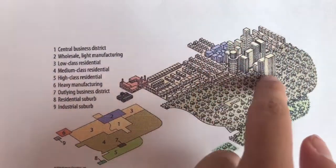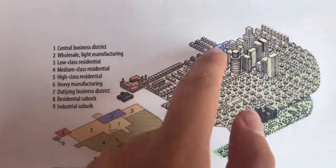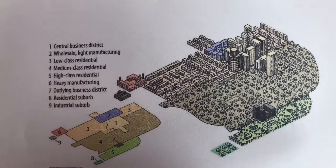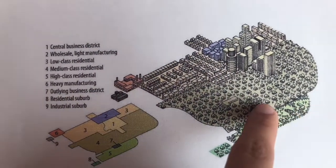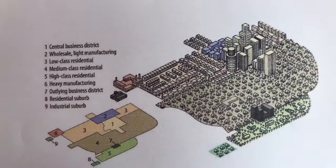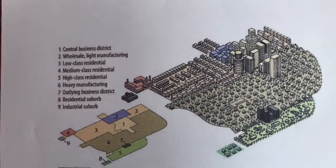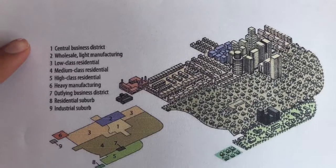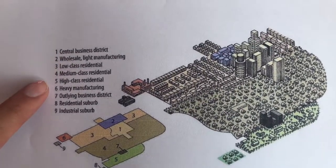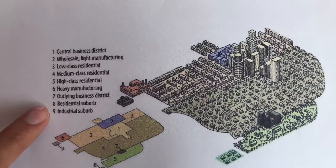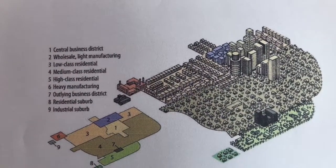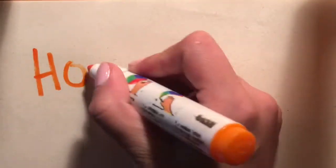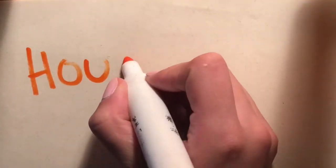Thus, the model states that even though a city may have begun with one central business district, it will have other smaller central business districts developed on the outskirts of the city. If other CBDs developed on the outskirts of a city, they would be around valuable housing areas to allow shorter commutes. Some of the most known cities which use this model are Houston and Los Angeles, among others.